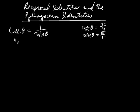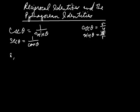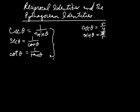Likewise, secant of theta is the same thing as 1 over cosine theta. And cotangent theta is equal to 1 over tangent theta. These identities are called the reciprocal identities.